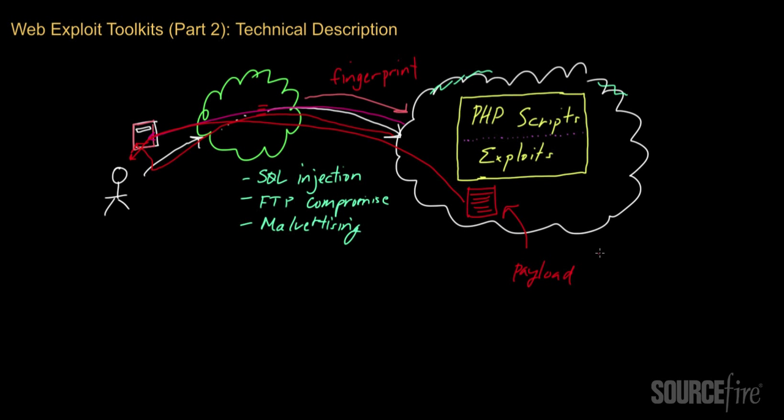And typically, we see payloads like, for example, Zeus, Zero Access, which is a really popular piece of malware today, Crydex and others. These are actually typically seen. Black Hole, for example, I've seen using these different payloads.